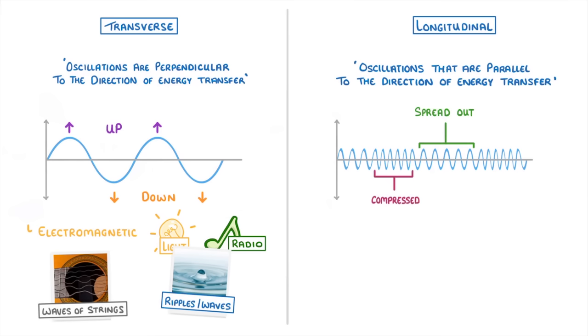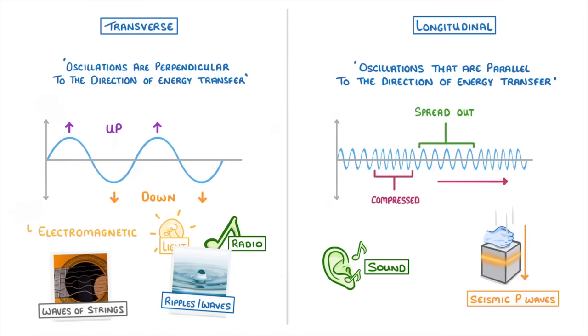In motion, it would look as if this area of compression is moving from the left to the right within the wave. Examples of longitudinal waves include sound waves, and some types of shock waves, like seismic p-waves.